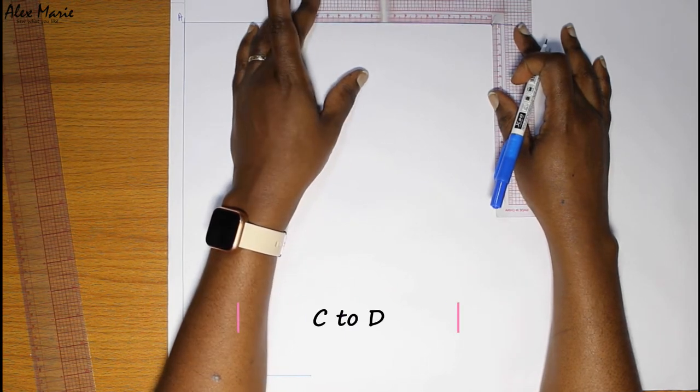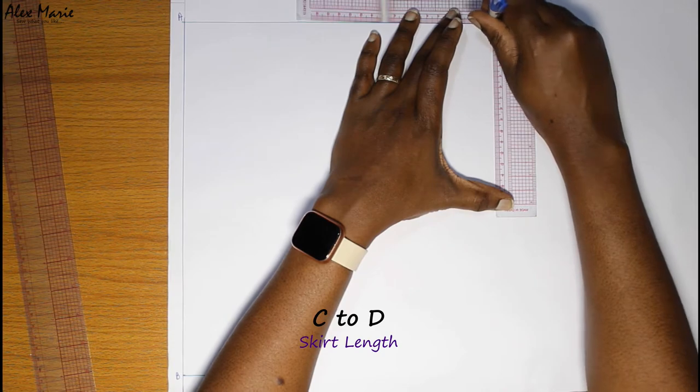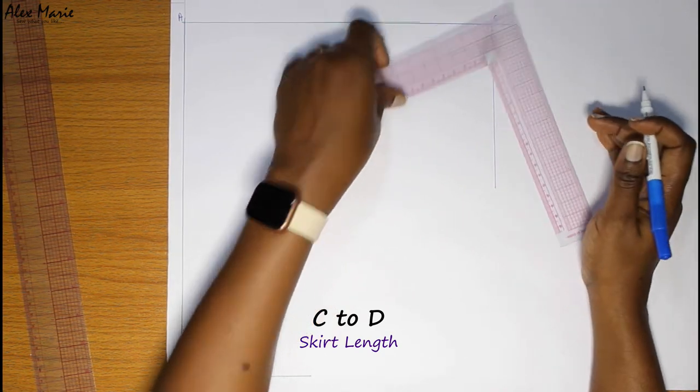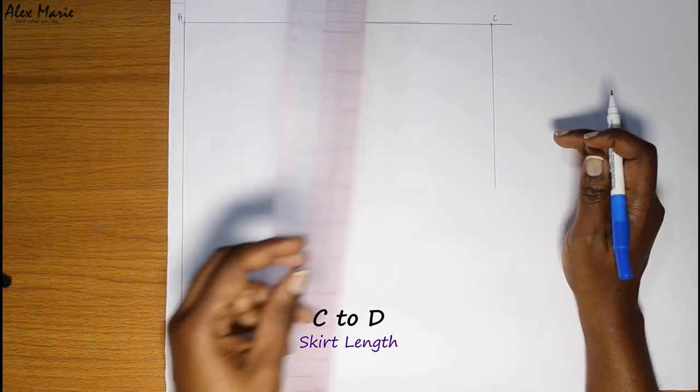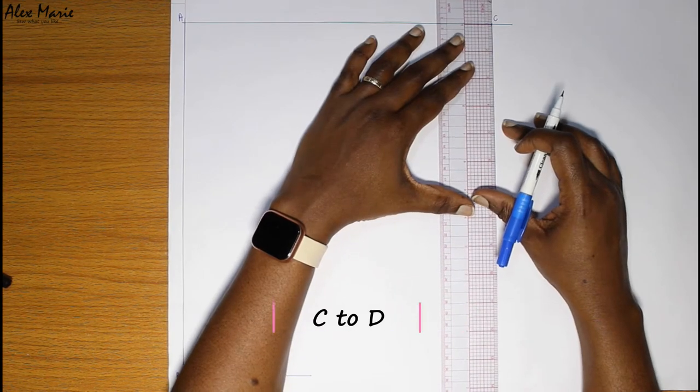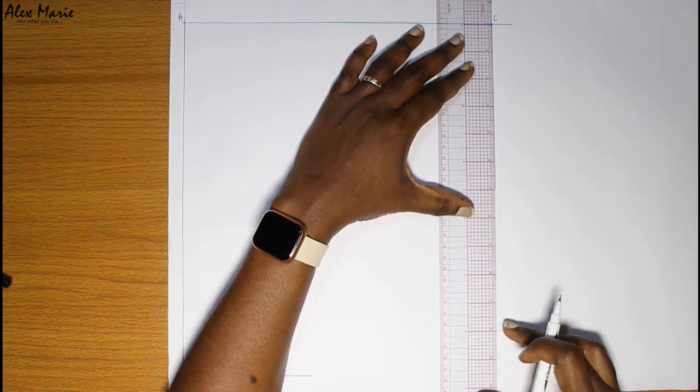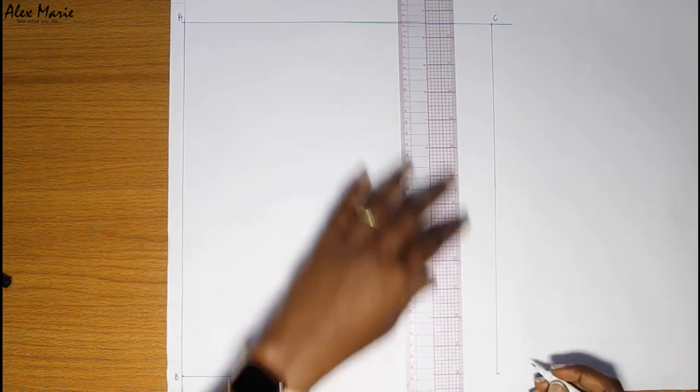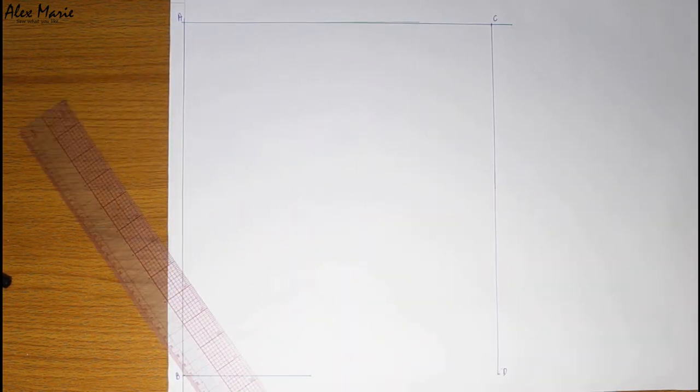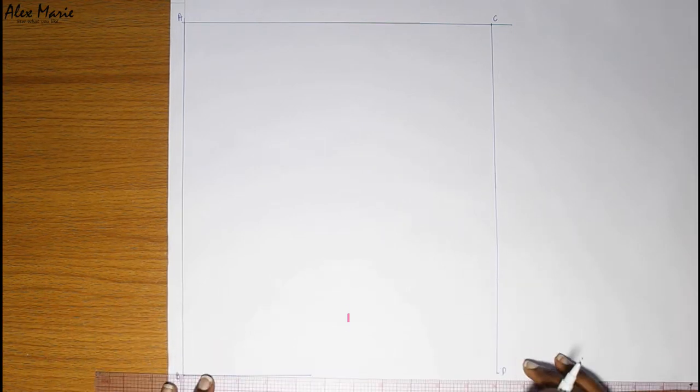A to C is half your hip. C to D is your skirt length. So we are essentially making a rectangle. This is your grid. It's always the starting point of any draft, and then you finally connect B to D.